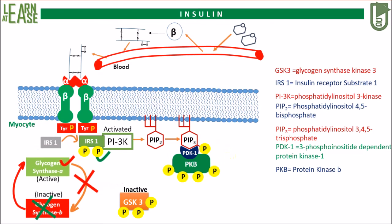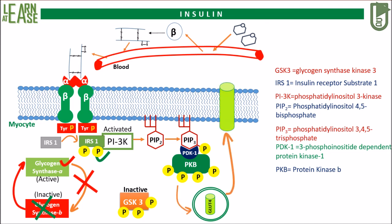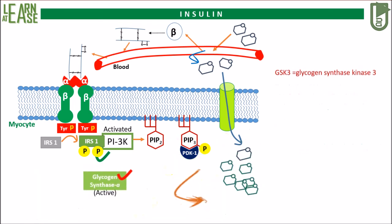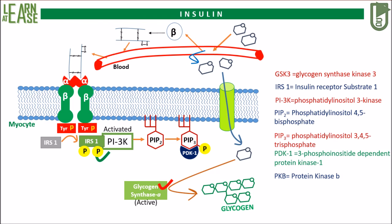Meanwhile, there exists a vesicle containing the glucose transporter GLUT4 in the cytoplasm. Activated protein kinase B induces clathrin-aided movement of GLUT4 and fuses it to the cell membrane. Now through GLUT4, glucose molecules from the blood enter into the cell. Activated glycogen synthase makes use of these glucose molecules to synthesize glycogen in the muscle cell.